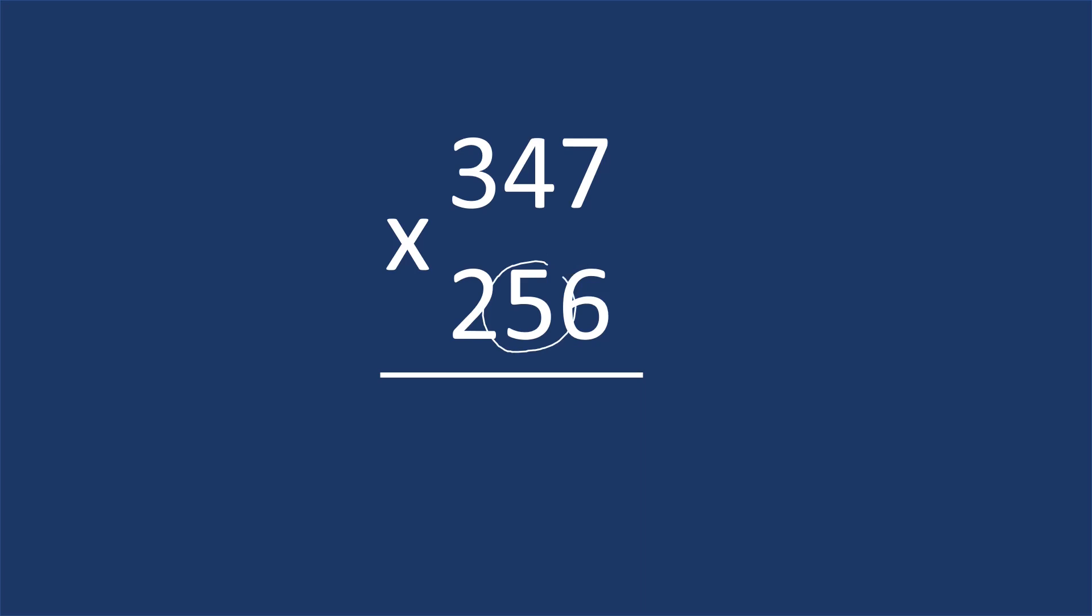Then we're going to move to the 5 and do the same process. Multiply by the 7, then multiply by the 4, then multiply by the 3. Then we're going to go with the 2 and do the same thing. Multiply by the 7 and the 4 and then the 3. Alright, so let's start.